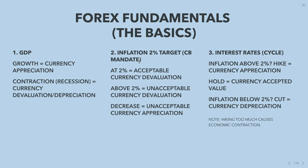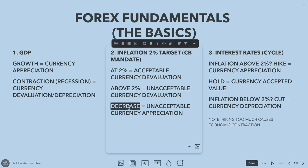Looking at inflation: central banks have a two percent target and a mandate to get inflation to that target. Two percent inflation is actually acceptable currency devaluation — it's the Goldilocks level, not too hot, not too cold. Whereas if inflation goes above two percent, that is seen as unacceptable currency devaluation.